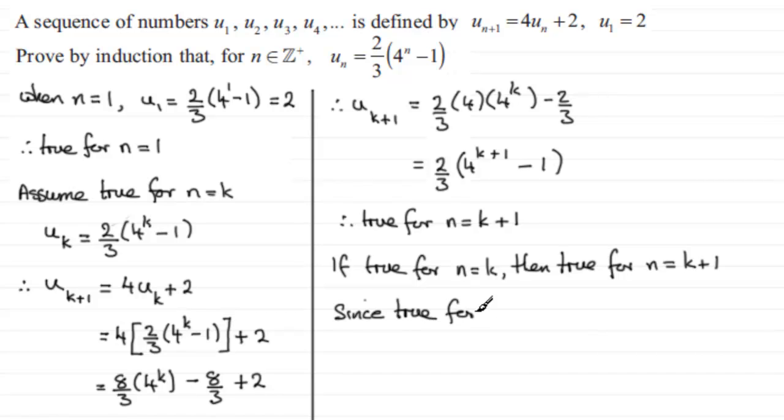therefore, it's true for n equals 2. Because we proved that it's true for the next value up. If it's true for a particular value. And if it's true for n equals 2, it must be true for n equals 3 and 4 and so on.